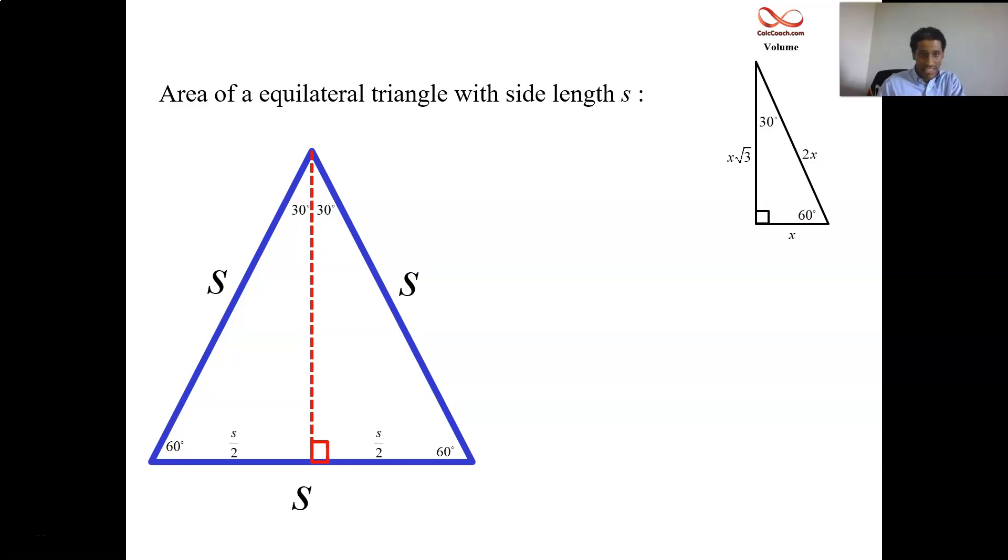So we have everything we need to find the area. The base is s. We need to find the height. Well, according to the 30, 60, 90, if you just focus on the right triangle there, it's that guy who's x. And so you take that guy s over 2 and you multiply it by root 3. That'll give you the height. So you're ready. One half the base times the height. One half of s times s over 2 root 3. Multiply that out and you get s squared over 4 root 3. Maybe put the root 3 over 4 first and call it root 3 over 4 s squared.